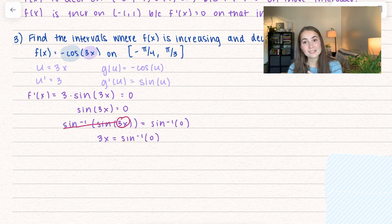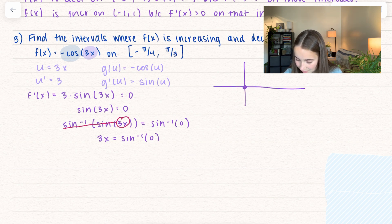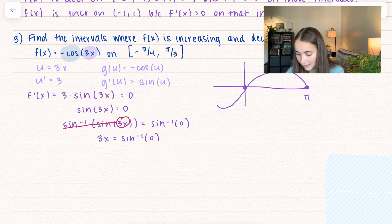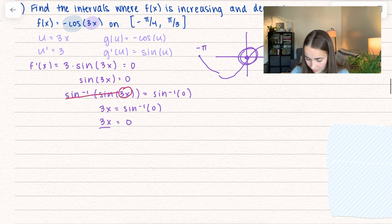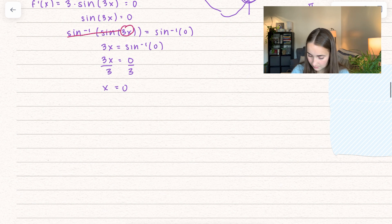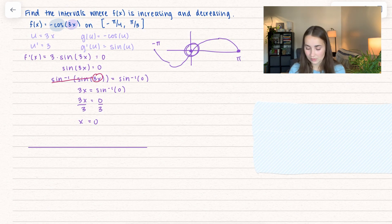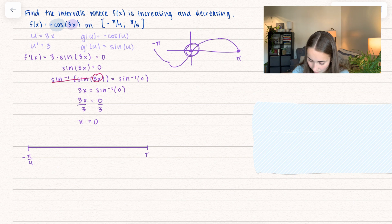Setting the derivative equal to 0: sine of 3x equals 0. Taking inverse sine of both sides, 3x equals inverse sine of 0. Sine equals 0 at 0, pi, and negative pi — but since we're restricted to our interval, the only relevant value is 3x equals 0, giving x equals 0 as our critical value. On the number line we stop at negative pi over 4 and pi over 3 since we're restricted to that interval.